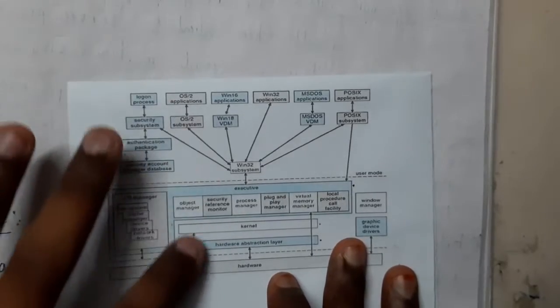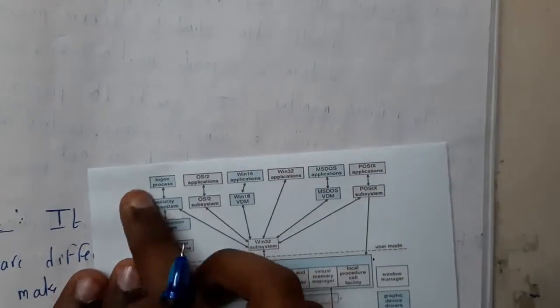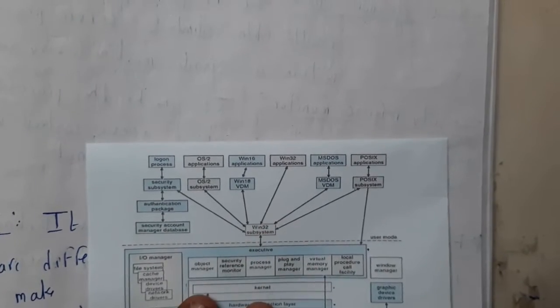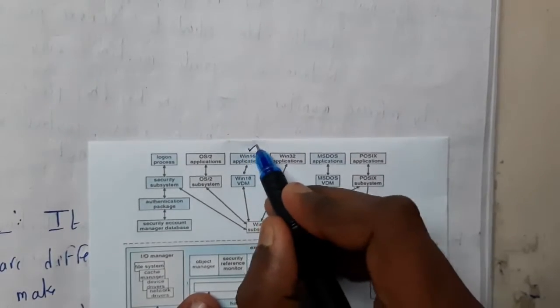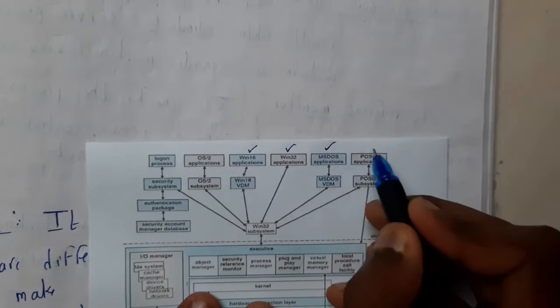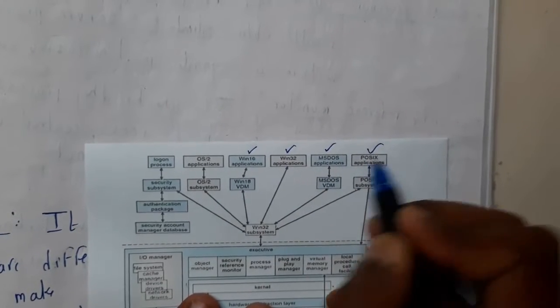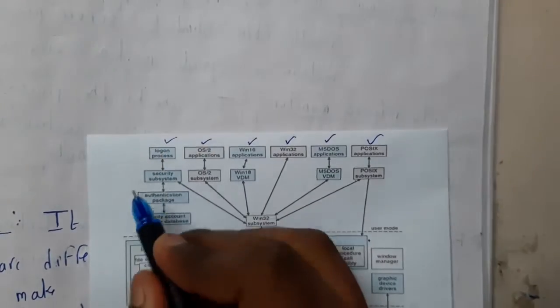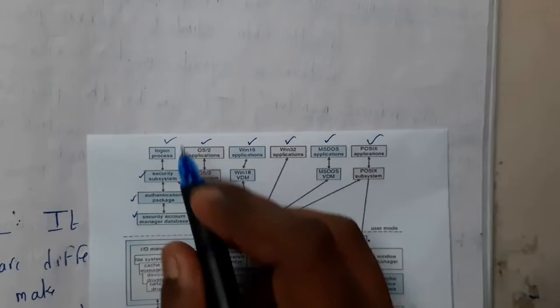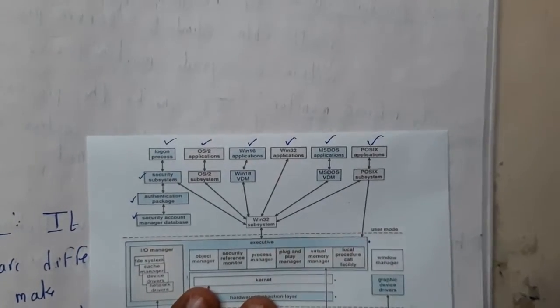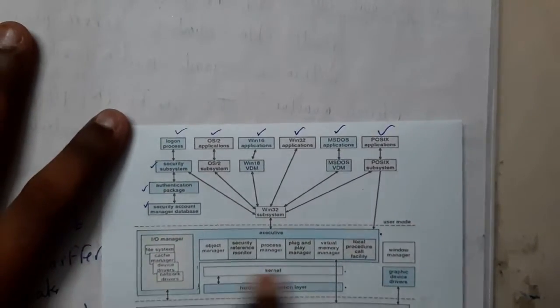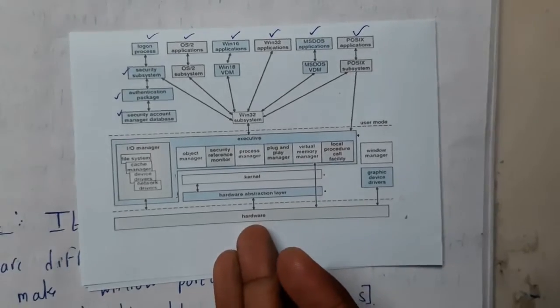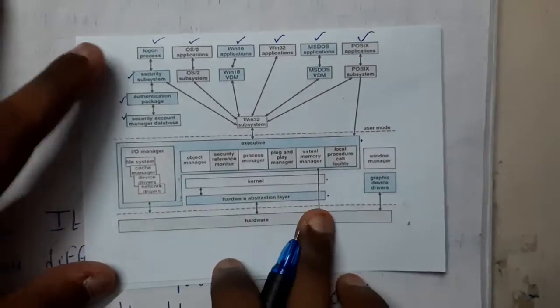We will discuss one component after another. We will be avoiding these upper components. Basically, these are folders like Windows 16, Windows 32, MS-DOS, POSIX, and other standard applications. These are sub-layers. We will mostly concentrate on the middle layer, and hardware is your RAM, ROM, and input/output devices.